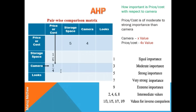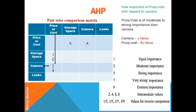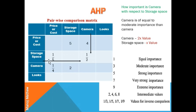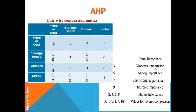Camera to price will be given 1/4 value. For camera with respect to storage space, camera is of equal-to-moderate importance over storage space — if camera is given 2x value and storage space x value, we get a value of 2. Vice versa, storage to camera will be given 1/2. Similarly, we can assign values to each remaining cell.